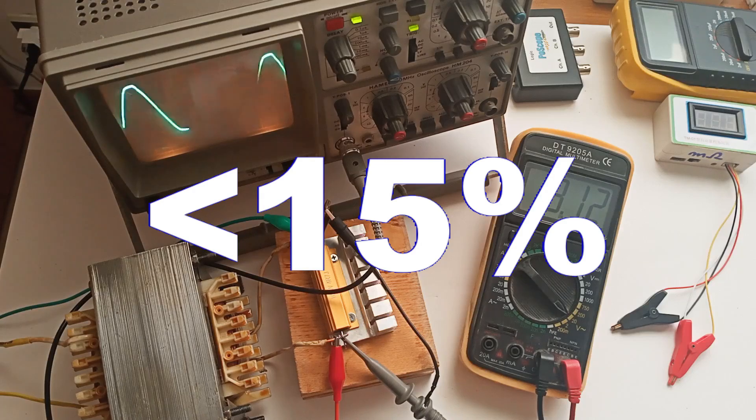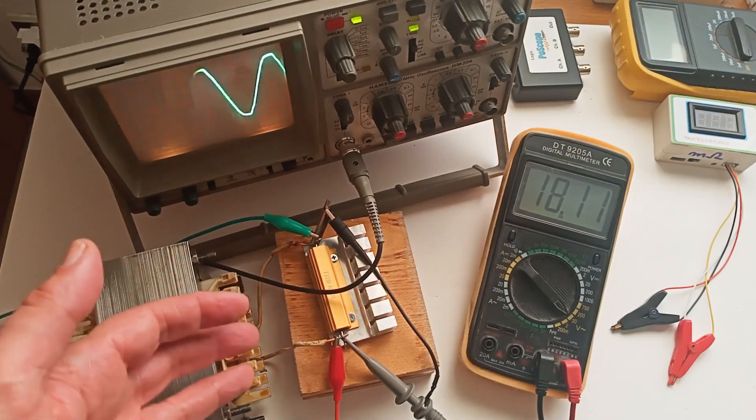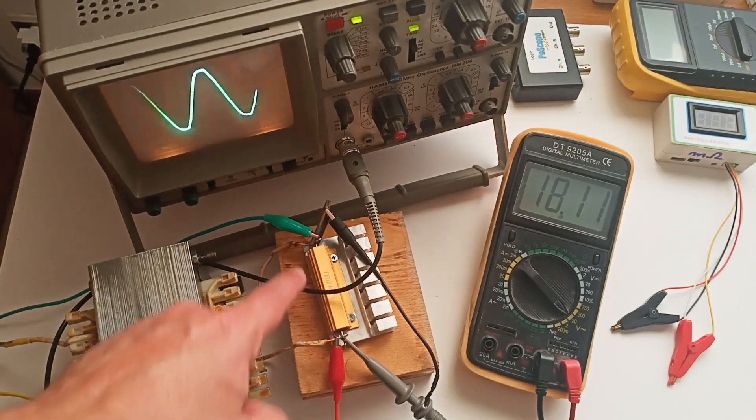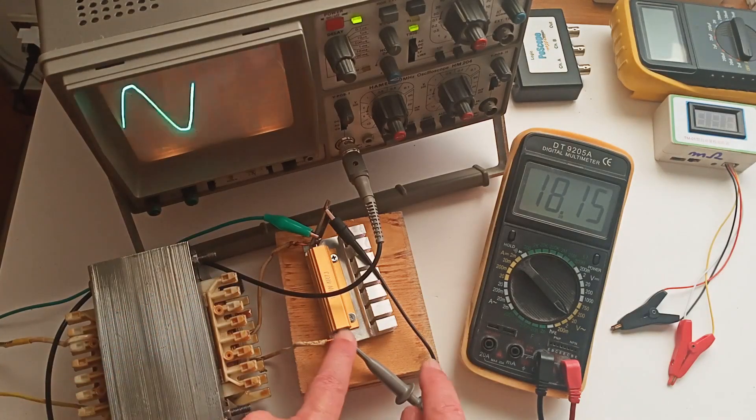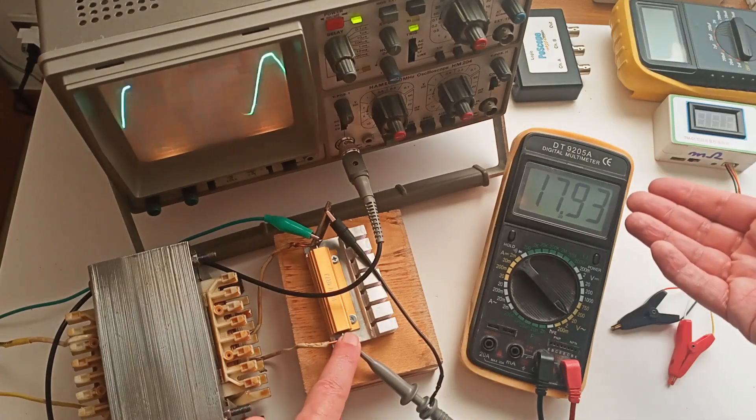As seen in the images, connecting a 4.7 ohm, 100 watt resistive load results in a secondary voltage drop of only a few tenths of a volt. The waveform remains almost unchanged, a clear indication that the transformer is very powerful.